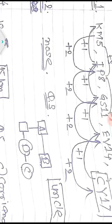For the first letters: C, then skipping one letter gives E, then G — a gap of two letters each time. For the second letters: M, then skipping two letters gives P, S, V — a gap of two letters. For the numbers: 5 + 3 = 8, 8 + 3 = 11, 11 + 3 = 14, 14 + 3 = 17. So the answer is CY17.